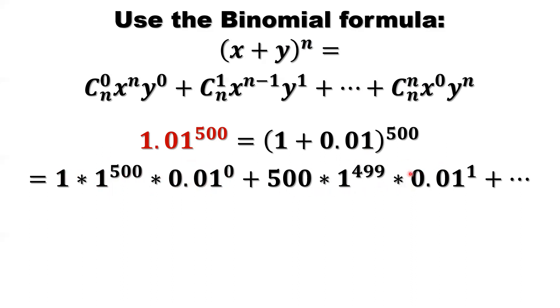Second part, look at it here. The combination number from 500 pick 1, which is 500. And 1 to the power of n minus 1, that's 499, which is 1 again. 0.01 to the power of 1 is 0.01. So 0.01 times 1 times 500. The second item is 5 plus remaining part.